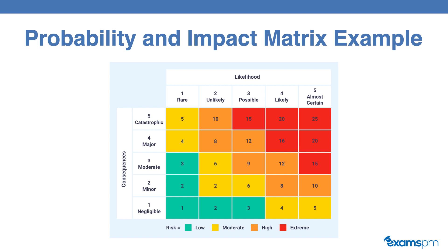Every single project will have its own unique matrix, so you come up with the scale you want for the probability and impact, and where the color thresholds fall for each specific project — this chart will look a little different. This is just an example. With that, you will be able to find out whether the risk on your project is low, medium, or high, and quickly sort out where your high severity risks are so you can concentrate your risk management efforts.